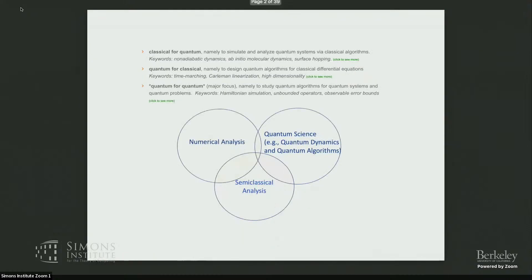Specifically, I am trained in numerical analysis as well as some classical analysis — that is a type of PDE analysis — and I work on these PDE problems with application to quantum science. The specific types of interest I am working on can be summarized into three different types of quantum problems: number one is classical algorithms for quantum dynamics, number two is quantum algorithms for classical problems such as classical differential equations and learning tasks, and the focus of today's talk is quantum algorithms for quantum dynamics.